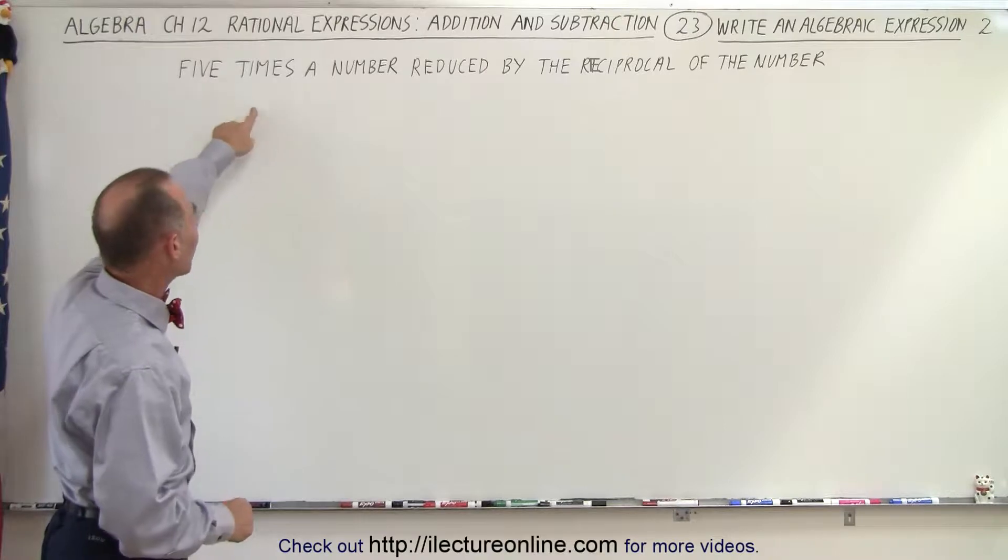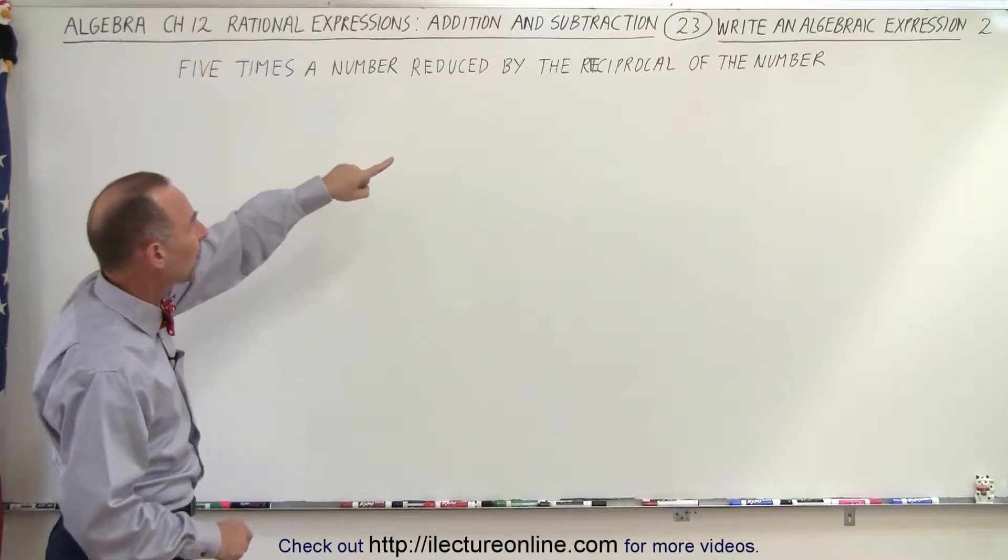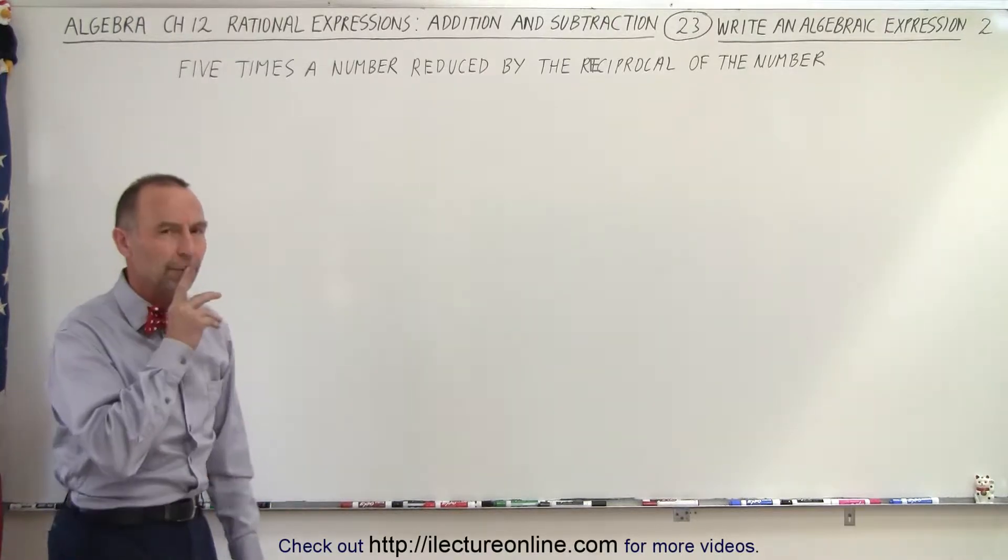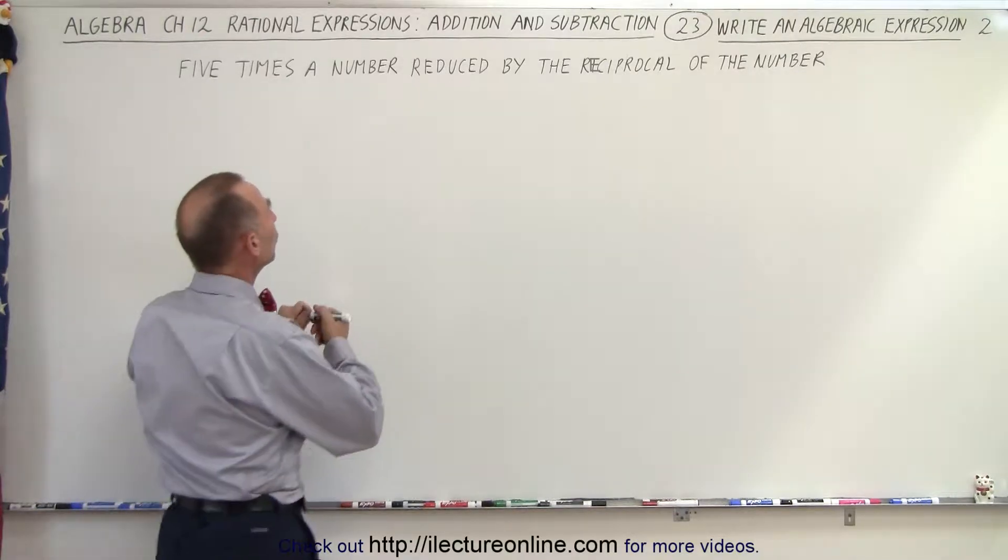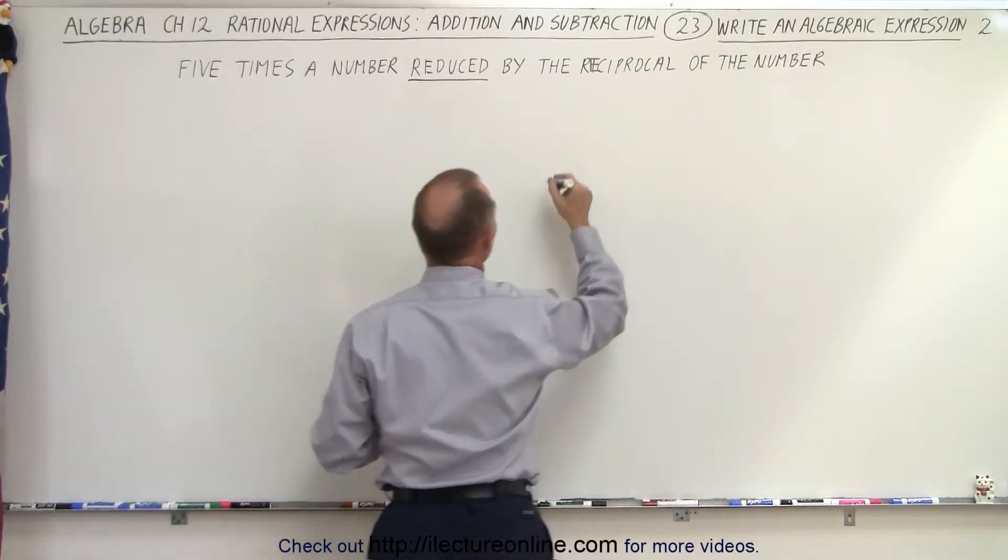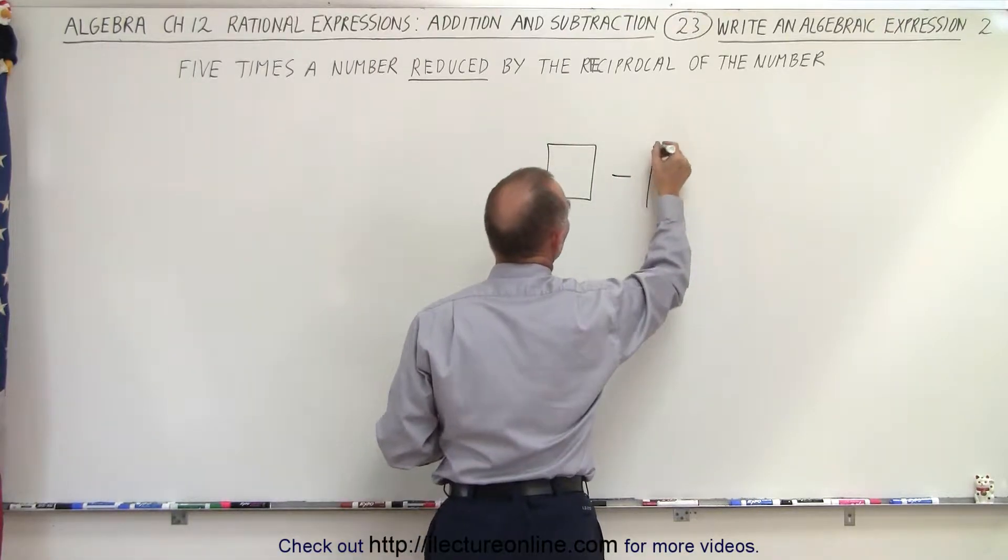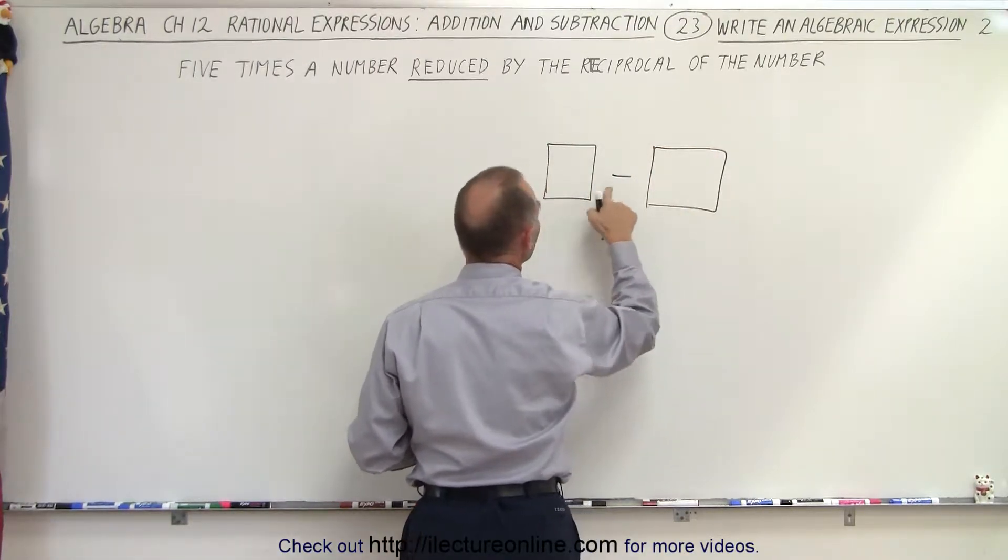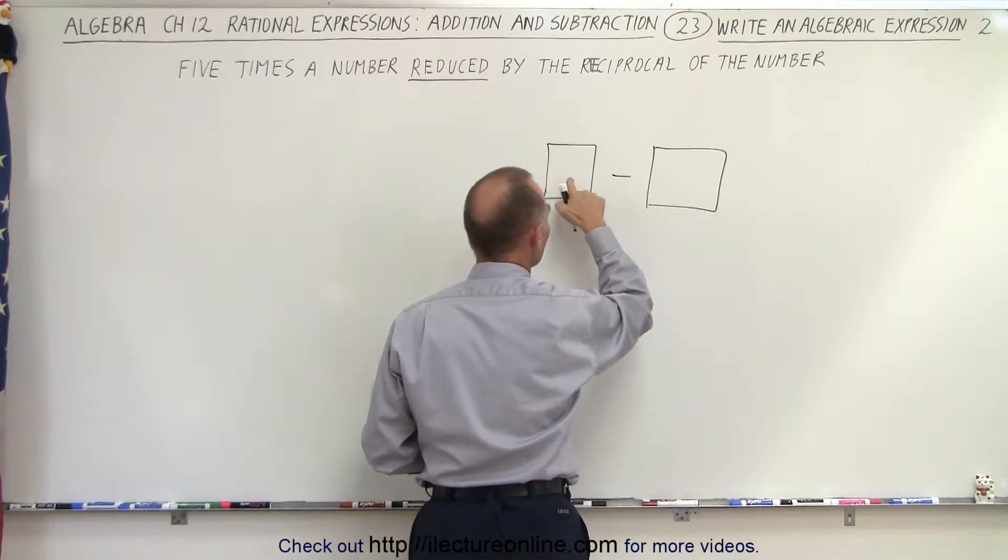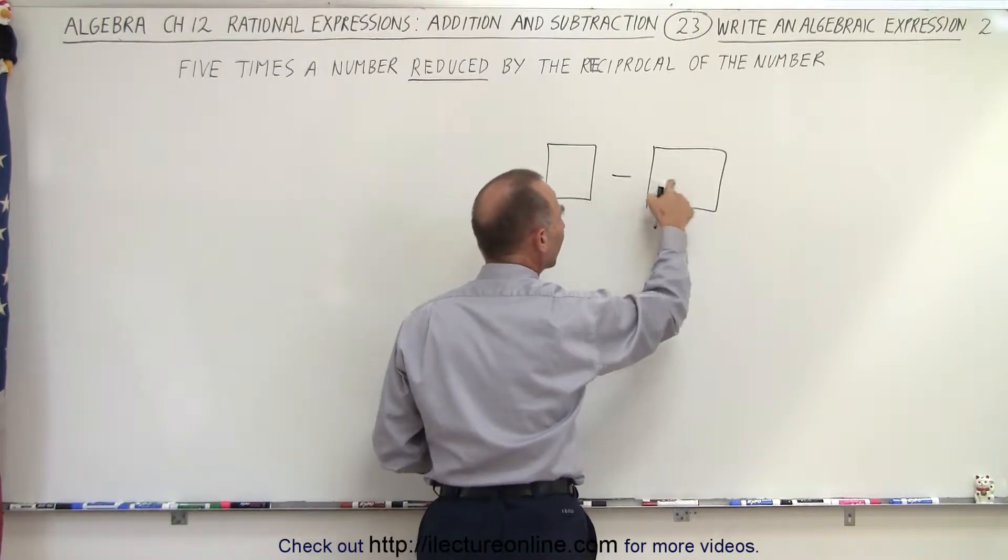It says here five times a number reduced by the reciprocal of the number. The word reduced means subtracting. So I'm going to take something and reduce it by something else - something minus something. A number or some expression reduced by something else.